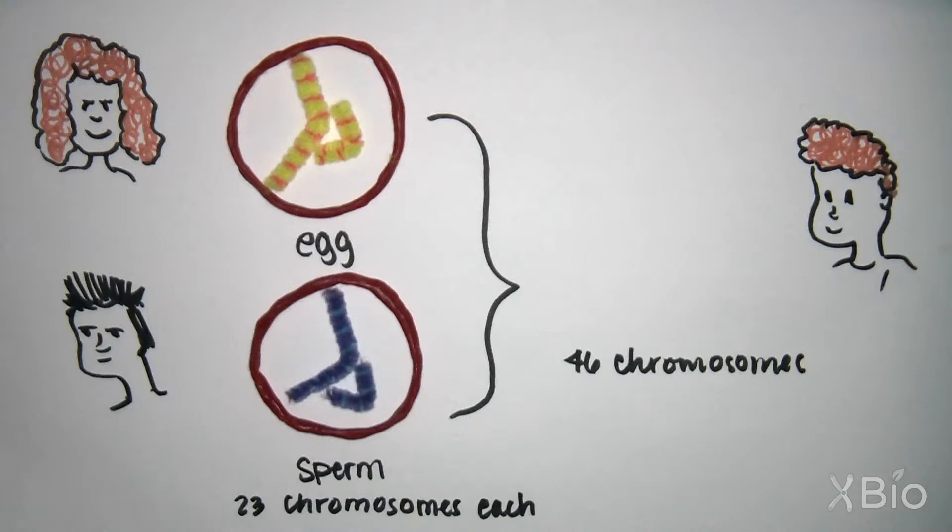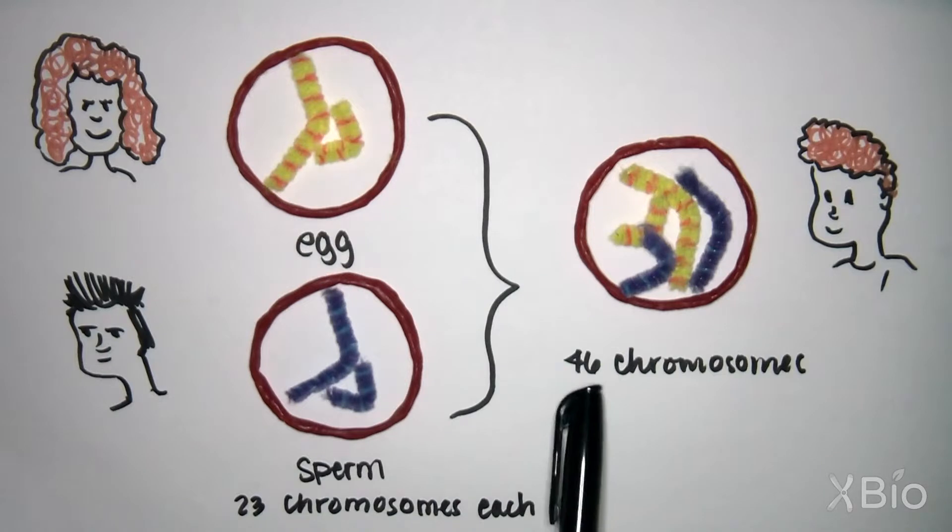For simplicity, we will only follow two chromosomes through meiosis. When the egg and sperm fuse, they produce a fertilized cell, which has 46 chromosomes, one copy from your mother and one from your father.